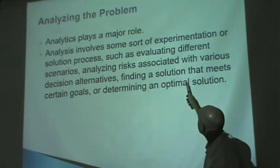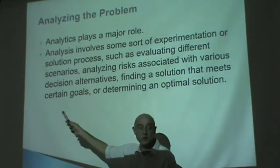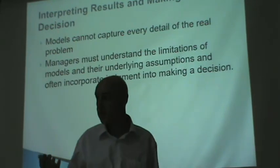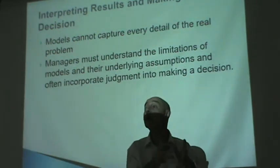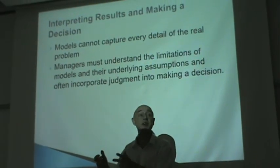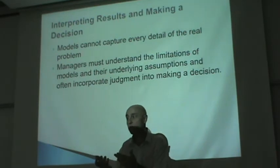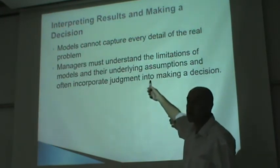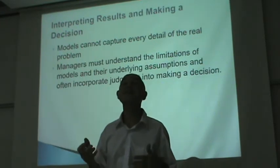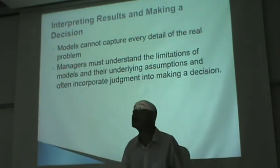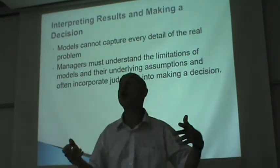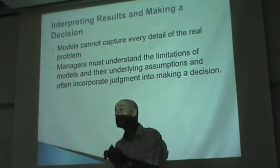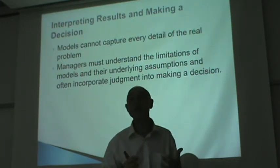You look at alternatives and solutions, and the solutions have to meet some goals. Then you interpret the results. The results tell you what the real cause is and therefore what the real solution is. You need to understand that sometimes models are simplifications — they are made to be easy to work with, they're not the real thing, and they're not going to give you exact answers, only approximate answers. These are simple limitations.